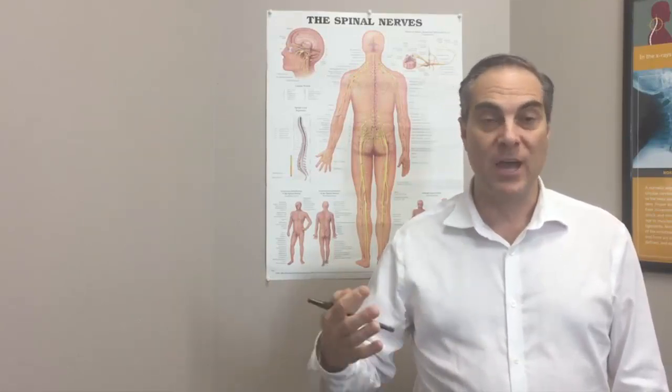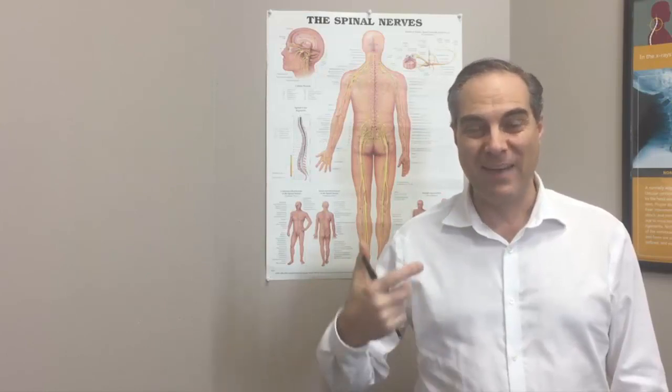Cervical radiculopathy essentially involves symptoms in the arms, forearm, hands, and fingers — like numbness, tingling, pain, or even weakness — that originate from the neck region. Anyone suffering with these symptoms realizes how worrisome they are. They may experience trouble sleeping at night due to arm numbness, tingling, or pain; losing grip strength and dropping items like a coffee mug; or heaviness in the arm and pain shooting down into the arms, hands, and fingers.